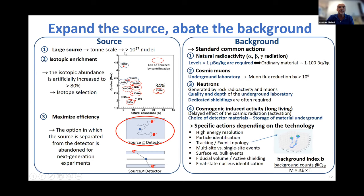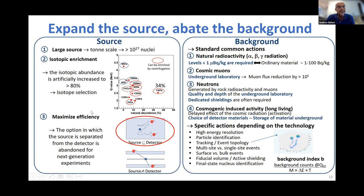We need ton-scale sources with more than 10²⁷ nuclei and isotopic enrichment above 80%. An important exception is tellurium-130 with a natural isotopic abundance of 34%, enabling sensitive searches even with natural tellurium. It's also important to maximize efficiency — the source must be embedded within the detector. For background control: standard measures include controlling natural radioactivity through material radiopurity, going underground to exclude cosmic muons and neutrons, using quality underground laboratories with appropriate depth, and dedicated shielding.